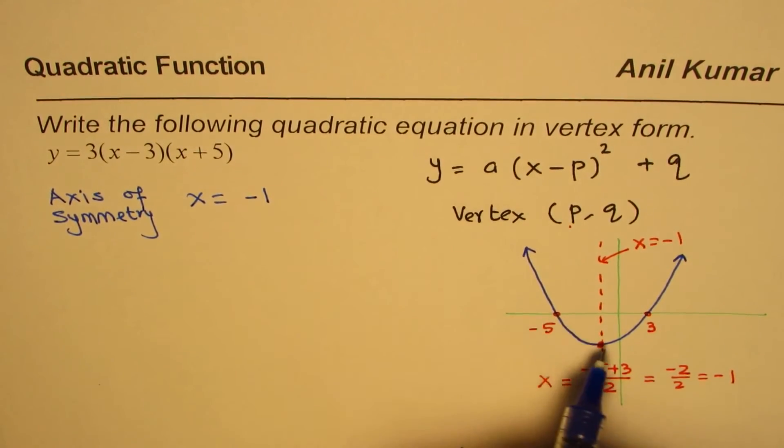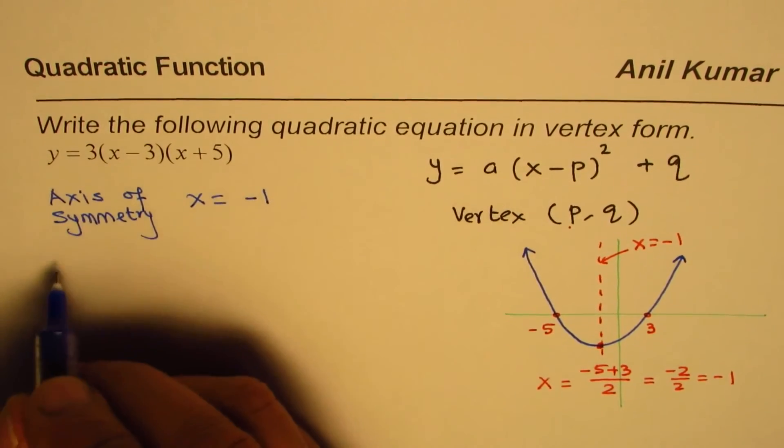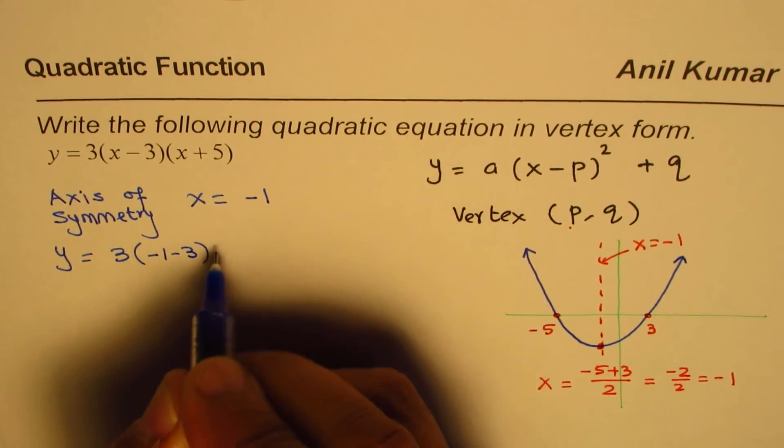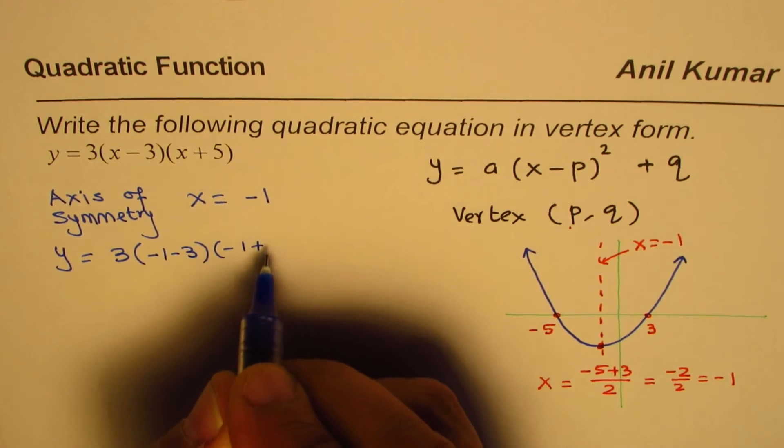So y will be equals to 3 times minus 1 minus 3 times minus 1 plus 5.